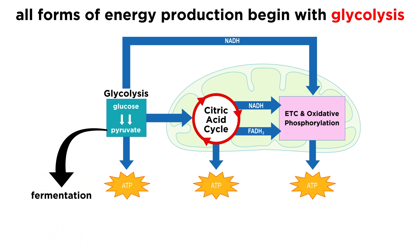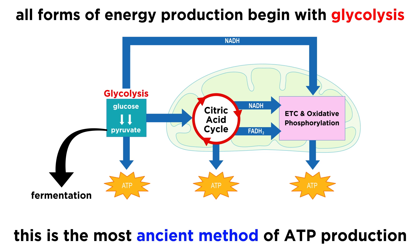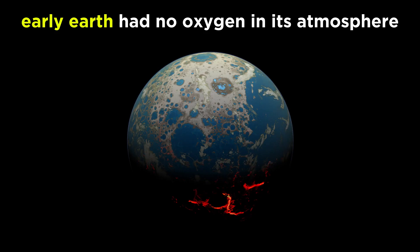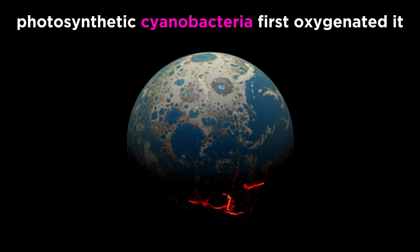To summarize, all of the forms of energy production that we have learned, whether aerobic or anaerobic, begin with glycolysis. This is therefore the most evolutionarily ancient method of ATP production, and must have evolved in very early forms of prokaryotic life, given that it occurs in the cytosol and not in any membrane-bound organelle such as mitochondria, which did not exist until eukaryotes came about. This makes sense with what we know about Earth's early atmosphere, which did not contain oxygen until the evolution of photosynthetic cyanobacteria, which prompted large-scale oxygenation of the atmosphere, making the evolution of aerobic respiration possible.